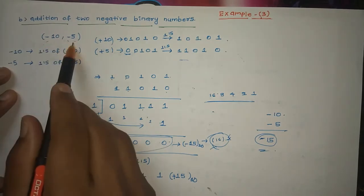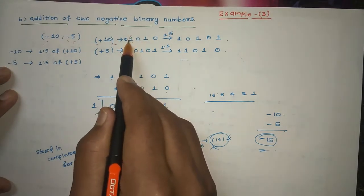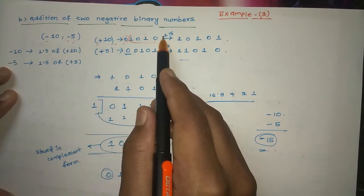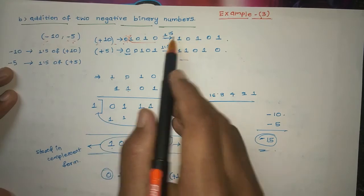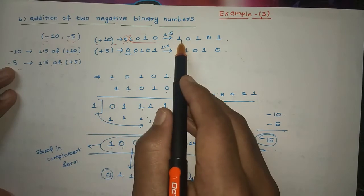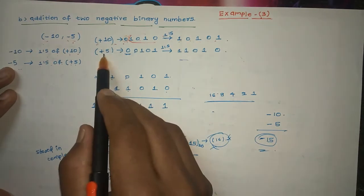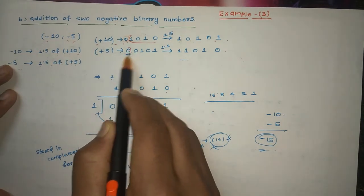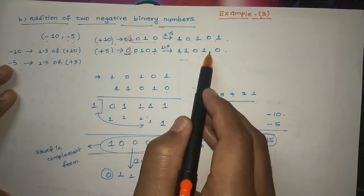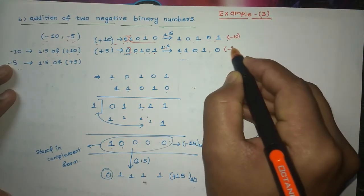So we have plus 10 and minus 5. Plus 10 in binary is 0 1 0 1 0, so 1 0 1 0 is 10. This is the plus representation with the sign bit. Then taking the one's complement gives us minus 10. Similarly, minus 5 is the one's complement of plus 5. Plus 5 is 0 0 1 0 1, so taking one's complement gives us 1 1 0 1 0. So we have minus 10 and minus 5.